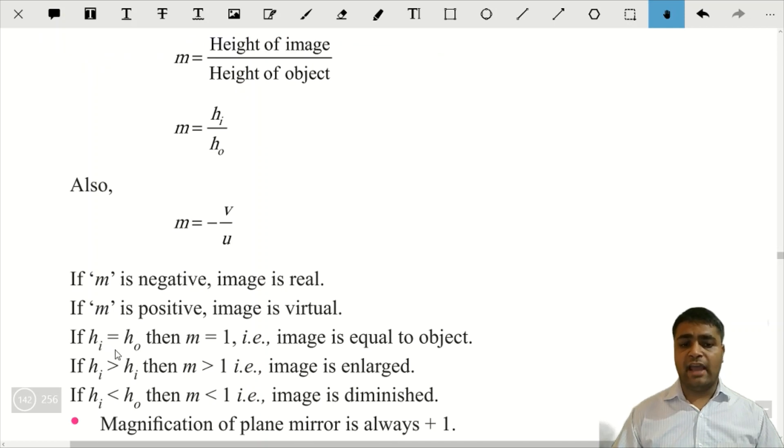If hi is equal to ho, height of the image equal ho height of the object ke, toh m kya ho jayega? One. And image is equal to object.